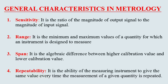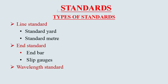Characteristics in metrology: Sensitivity is the ratio of the magnitude of the output signal to the magnitude of the input signal. Range is the minimum and maximum value of a quantity for which an instrument is designed to measure. Span is the algebraic difference between the higher calibration value and the lower calibration value. Repeatability is the ability of the measuring instrument to give the same value every time the measurement of a given quantity is repeated.